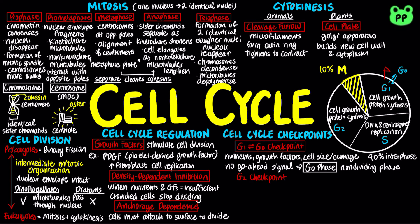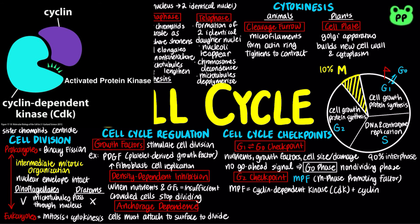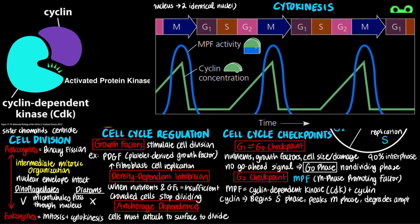The G2 checkpoint is regulated by MPF, which stands for maturation promoting factor or M phase promoting factor. MPF is made of two components: cyclin-dependent kinase and cyclin. MPF triggers a cell's passage past the G2 checkpoint into the M phase through phosphorylation of other proteins. Cyclin-dependent kinase is only active when cyclin binds. Cyclin concentration varies throughout the cell cycle — it is synthesized during S phase, peaks during M phase, and degrades during anaphase.